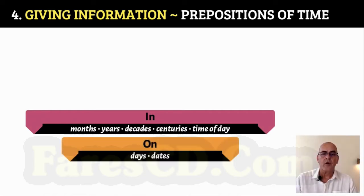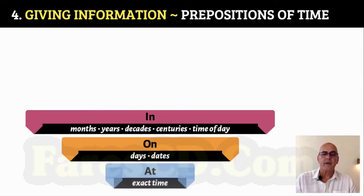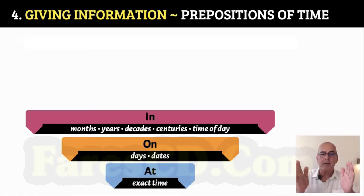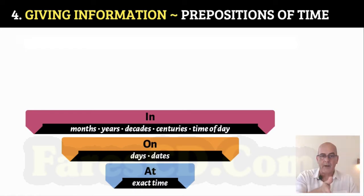We use 'on' for days and dates. We use 'at' for the exact time. So the three prepositions of time are: in, on, and at.